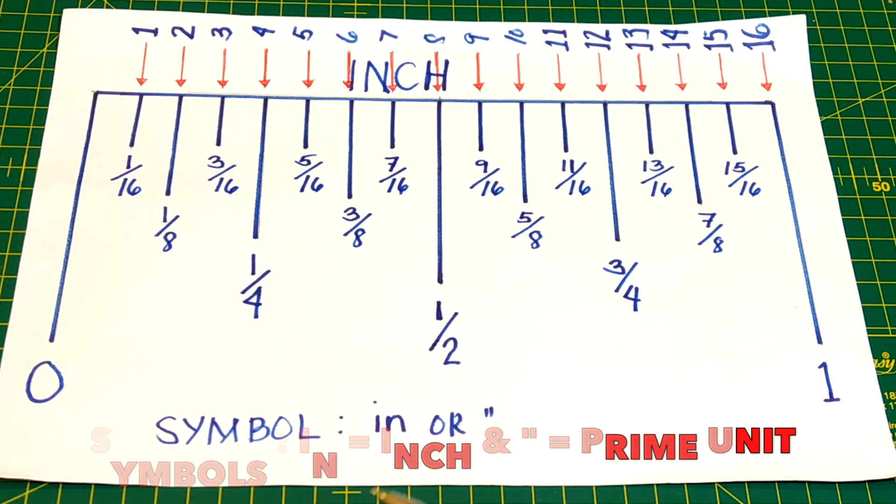The inch is a unit of British Imperial state customer measure equal to 1/36 of a yard or 1/12 of a foot. Since 1959, the inch has been defined officially as 2.54 centimeters.